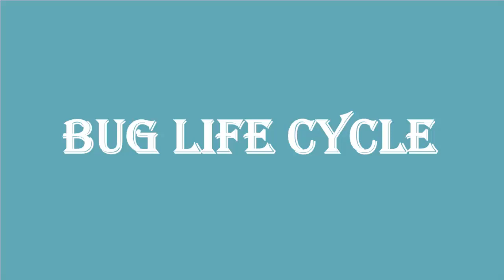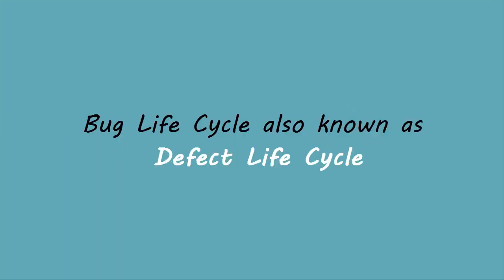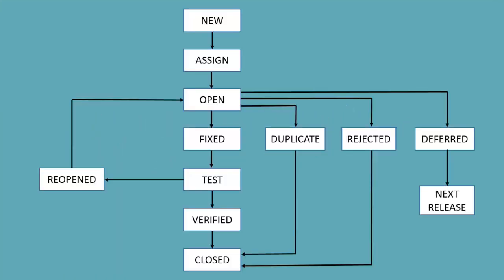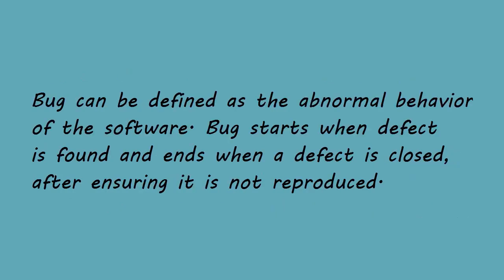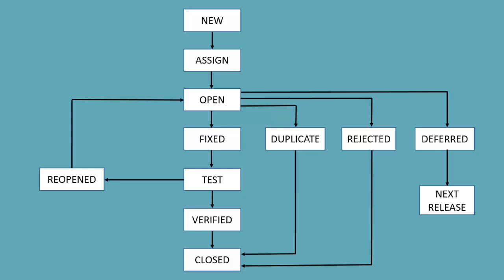Hi friends, this is Summa from softwaretestingmaterial.com. In this video we are going to see bug lifecycle, also known as defect lifecycle. In the software development process, the bug has a lifecycle and the bug should go through the lifecycle to be closed. The name of the bug status may vary depending on the tools and the process followed in the organization. Bug can be defined as the abnormal behavior of the software. Bug starts when a defect is found and ends when a defect is closed after ensuring it is not reproduced.